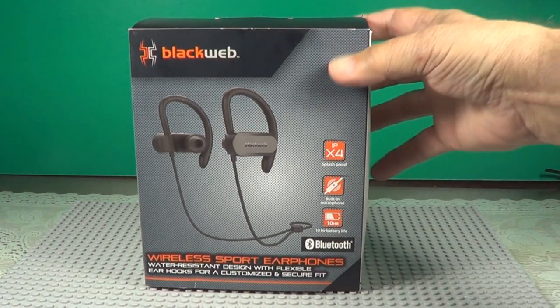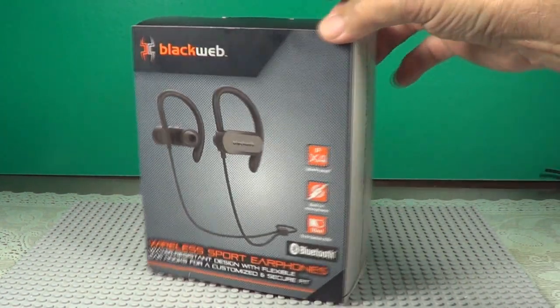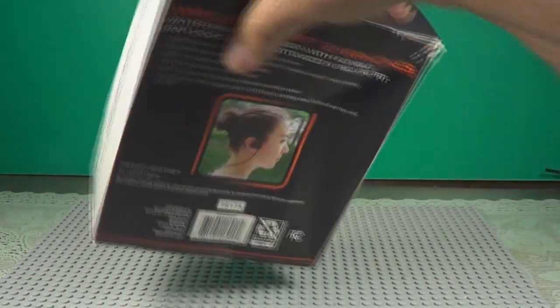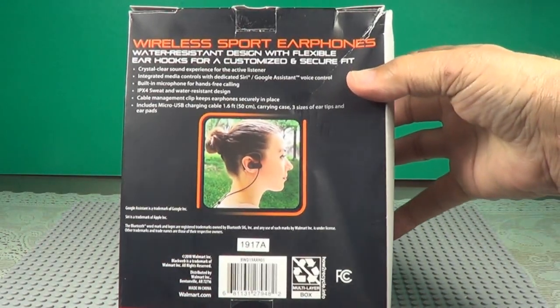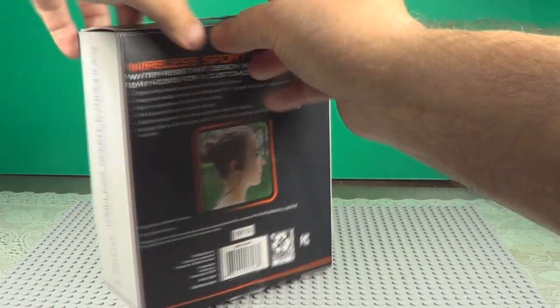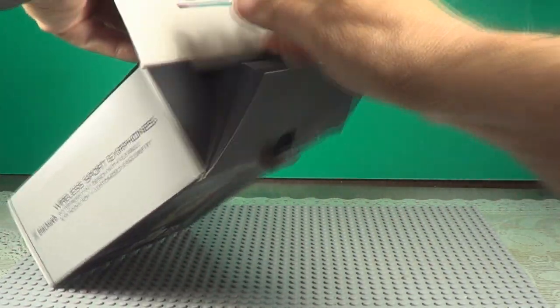Here's the box that comes in. It says Wireless Sport Earphones. There it is. Nice little setup in there. Relatively inexpensive too, but let's open it and take it out.